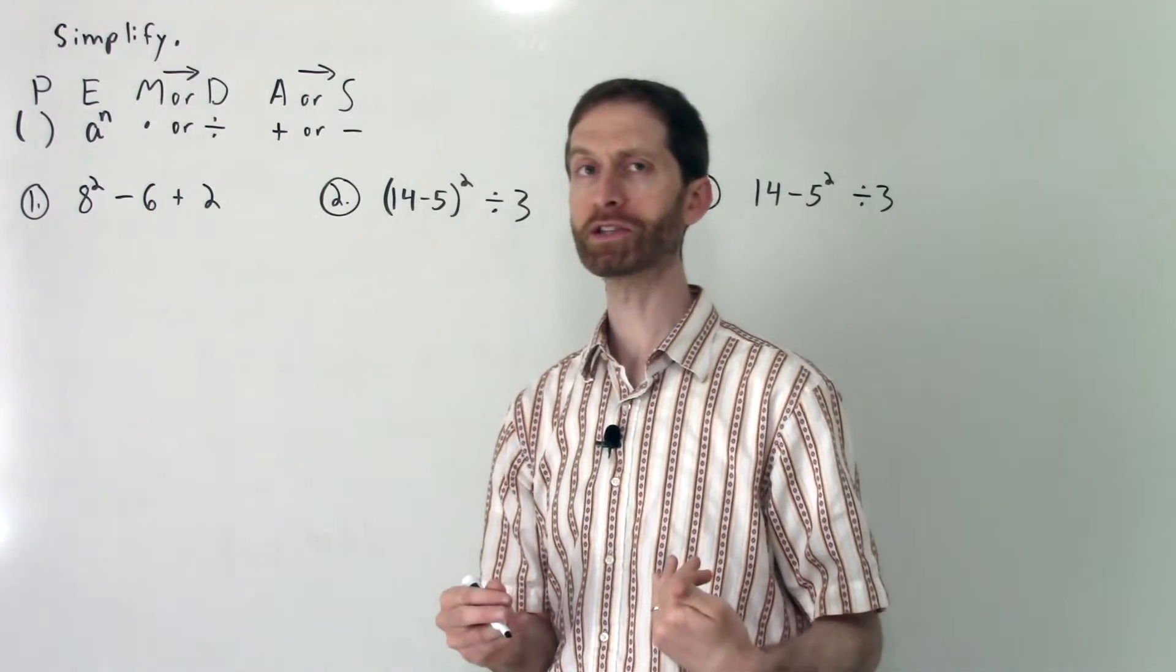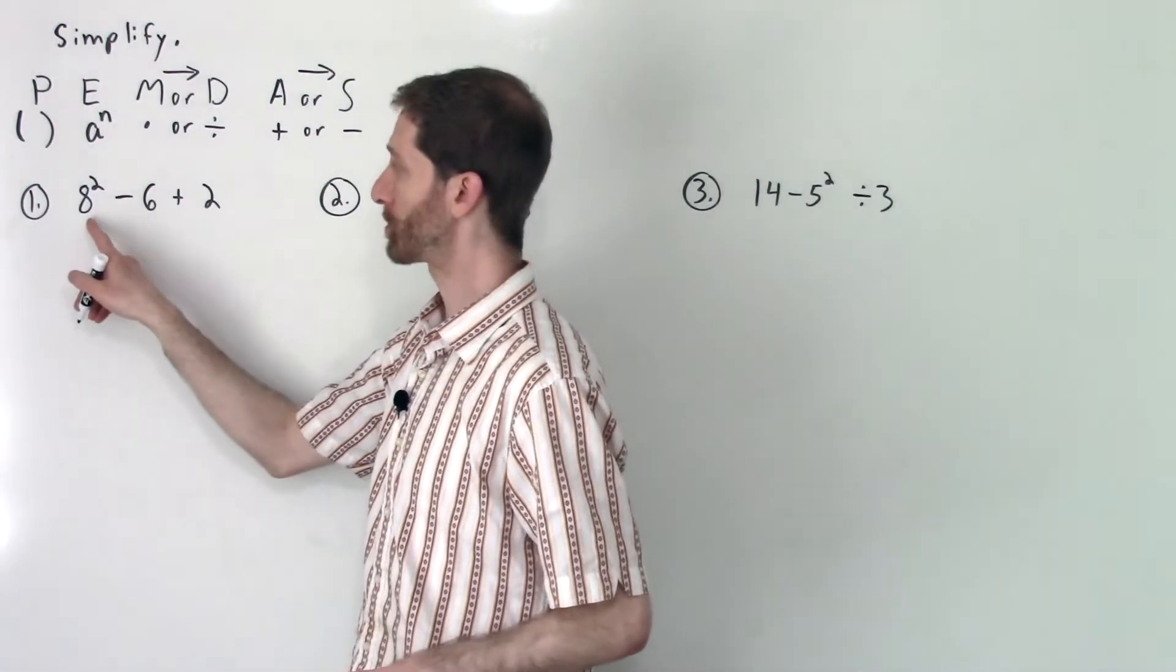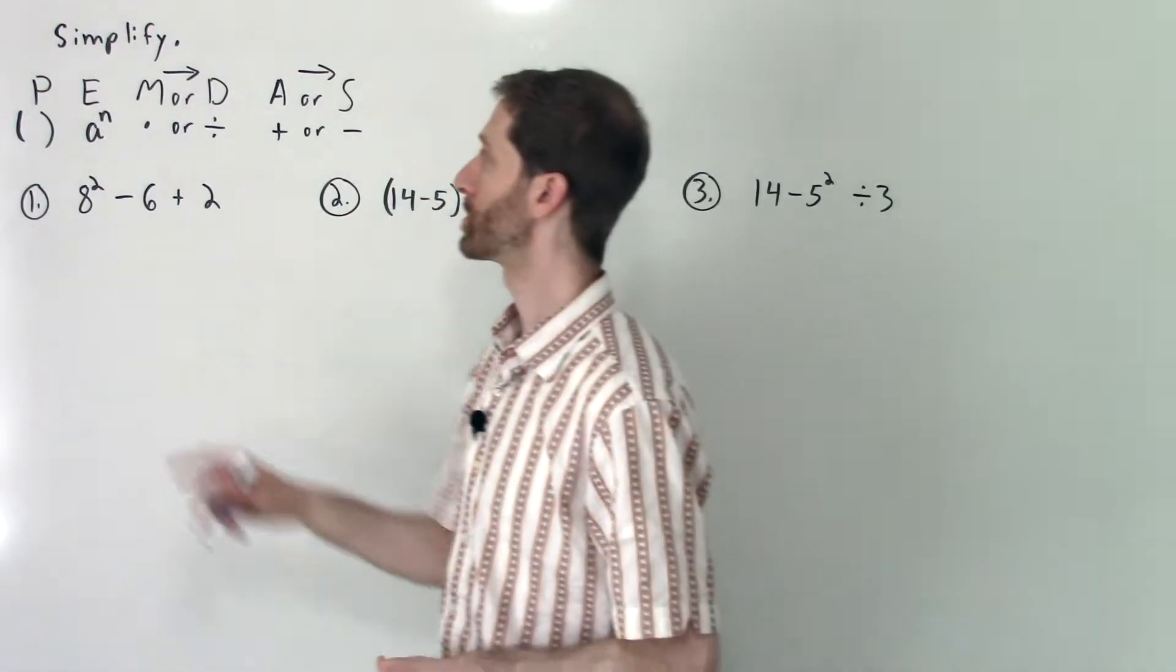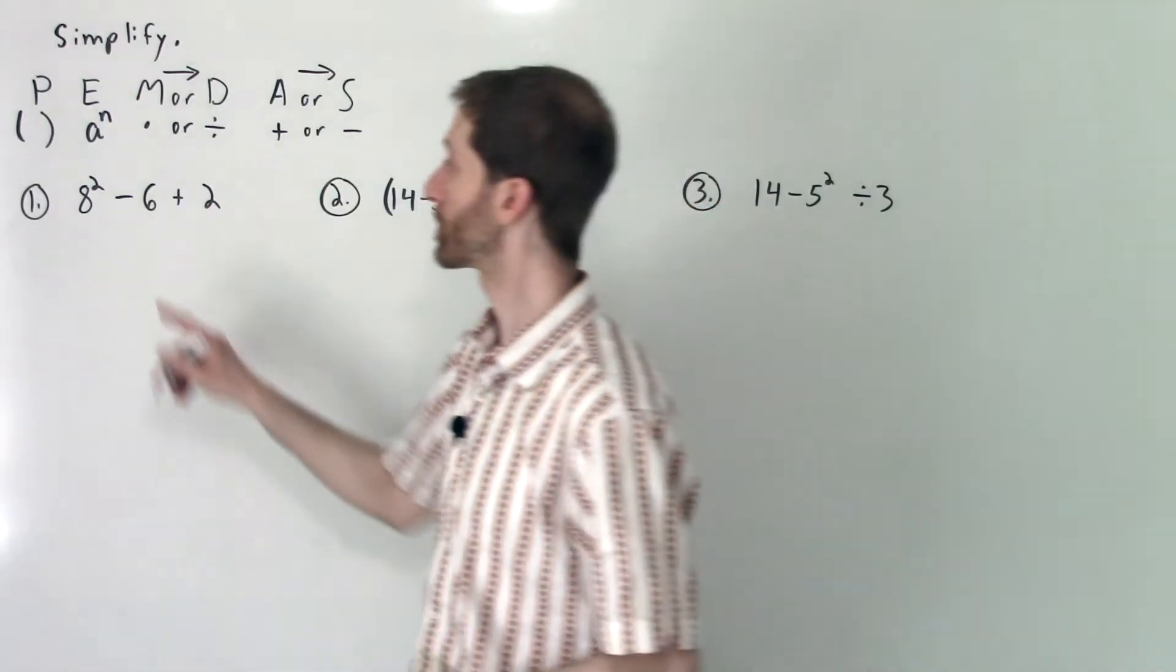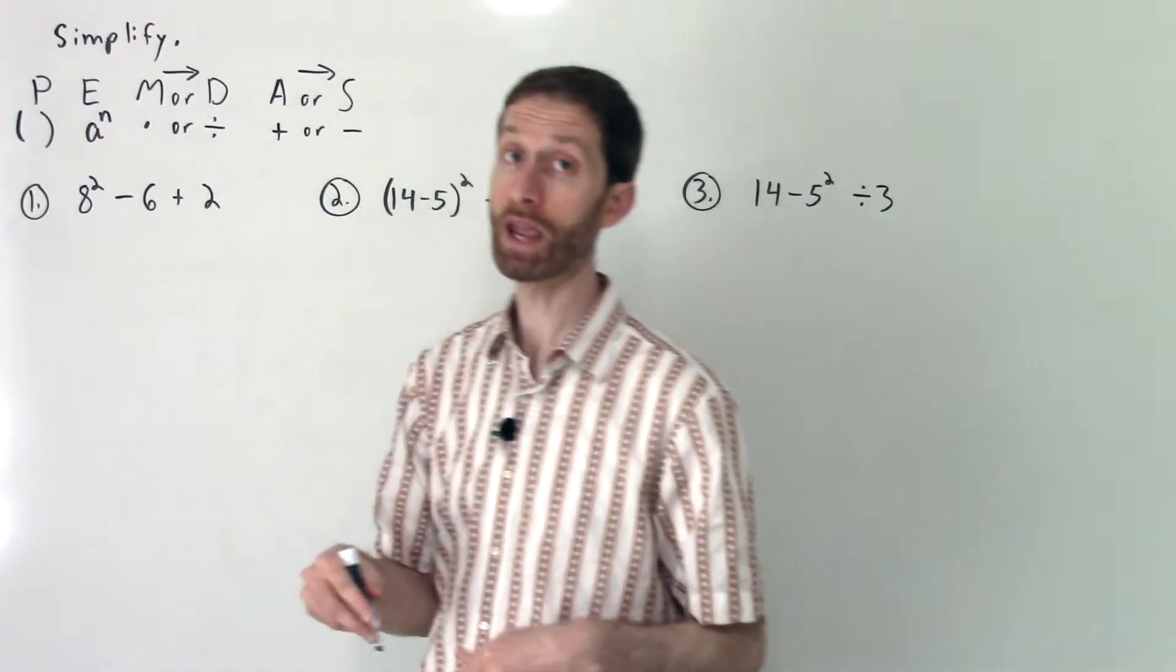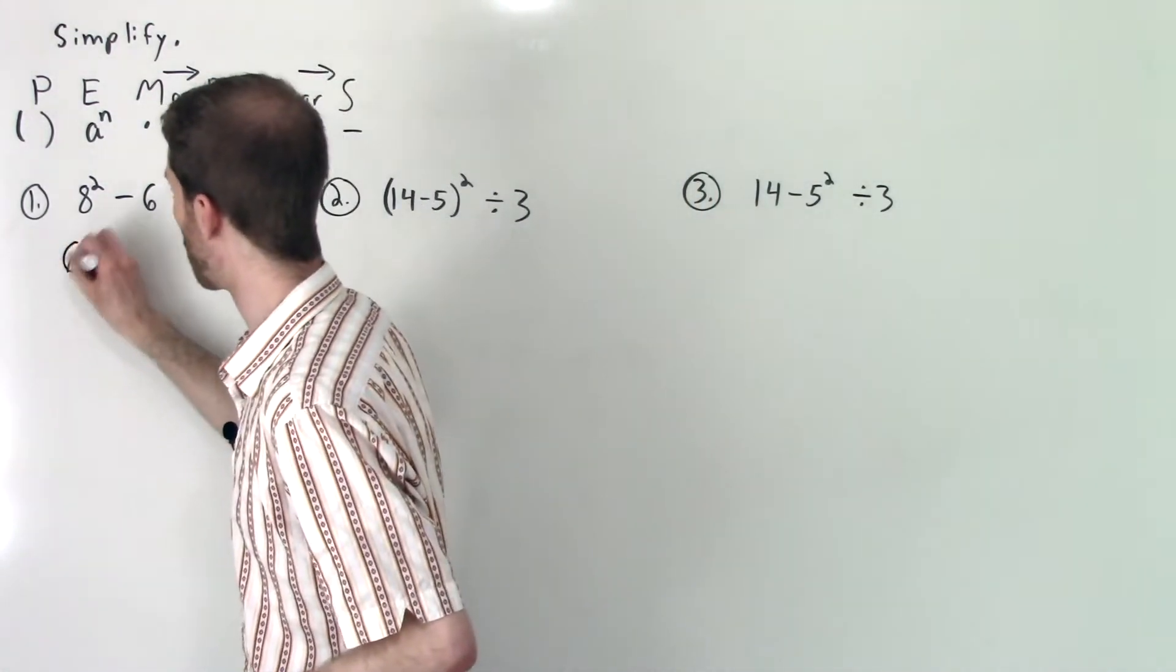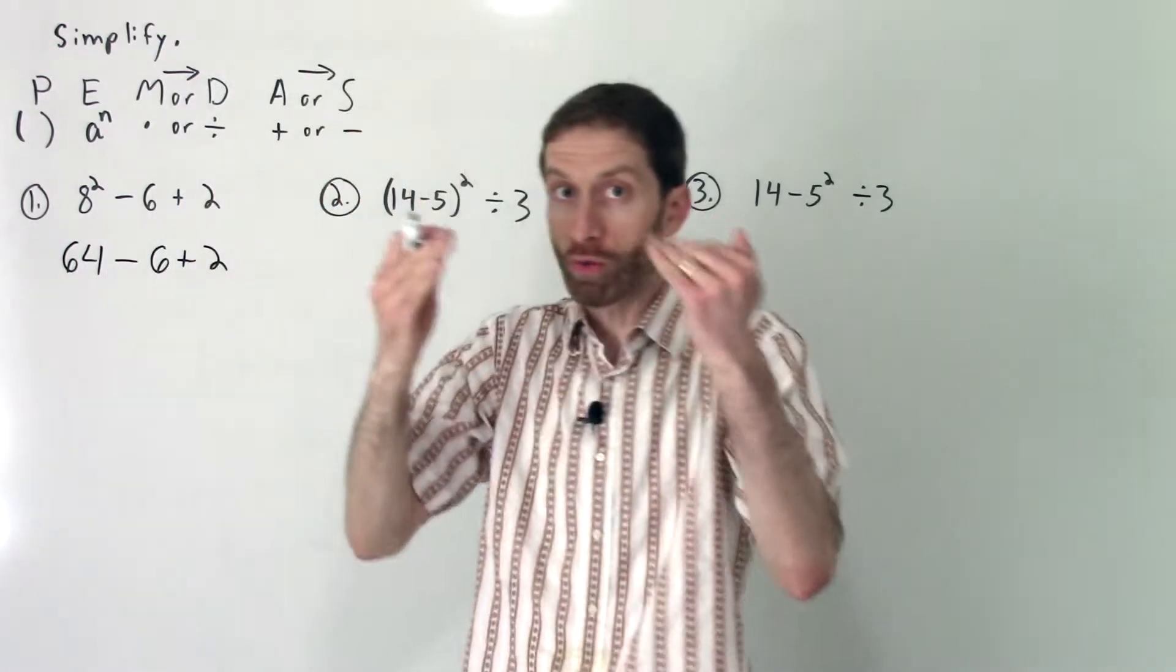Let's dive into a few examples. We've got 8² - 6 + 2. My order of operations makes me notice I have no grouping symbols, no parentheses, but I do have an exponent so I do that first. 8² is 8 times 8 which is 64. So I get 64 - 6 + 2.